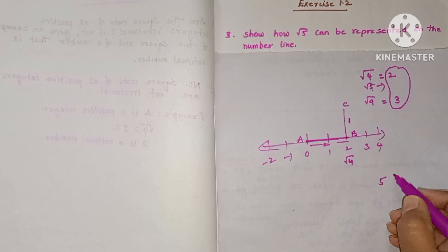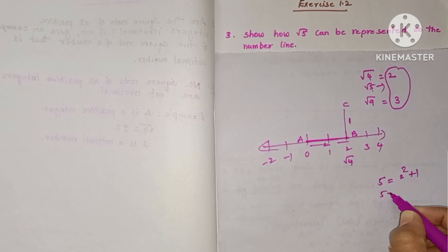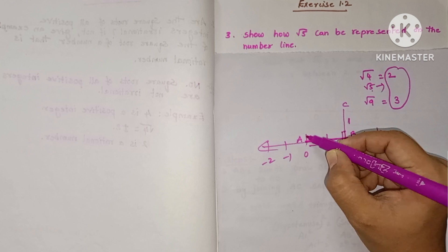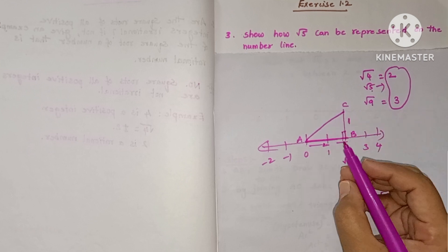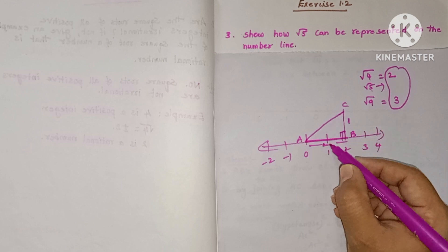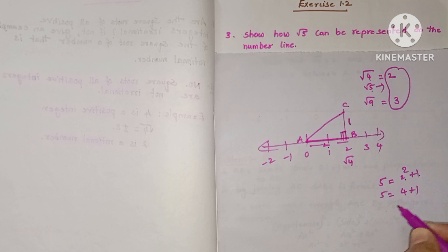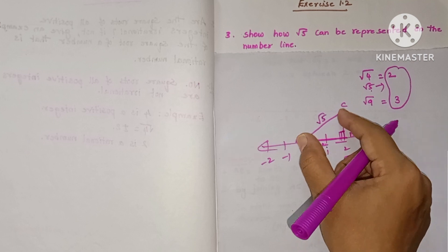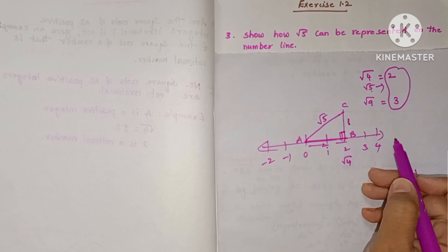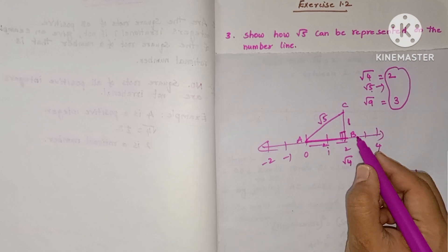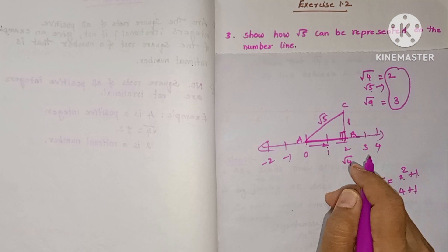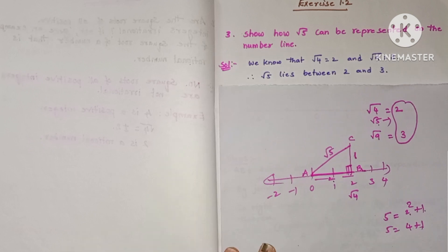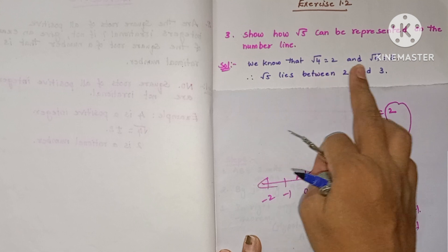We take AB = 2 and BC = 1 because 5 = 2² + 1² = 4 + 1. BC is perpendicular to AB, forming a right-angle triangle. By the Pythagoras theorem, AC² = AB² + BC² = 2² + 1² = 4 + 1 = 5, so AC = √5. With this AC as radius and A as center, draw an arc on the number line between 2 and 3.